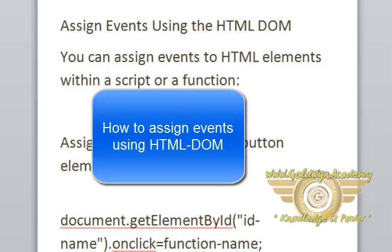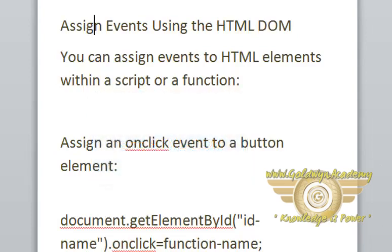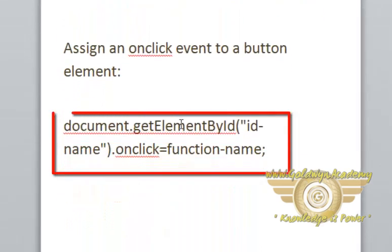Assign events using the HTML DOM. You can assign events to HTML elements within a script or a function. For assigning an onClick event on a button, here is the simple syntax: document.getElementById, then idName.eventName is equal to function.